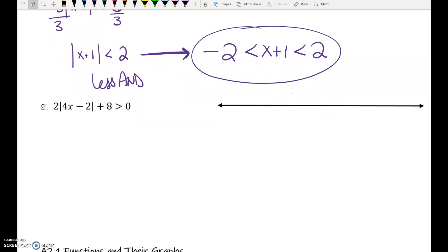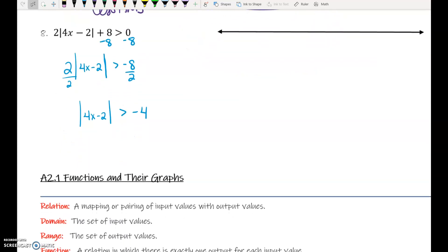Okay, last one, number 8. We start by subtracting 8. Do any of you make your absolute value bars ridiculously long so that you don't confuse them with 1s? Because I definitely do. Then we divide by 2.